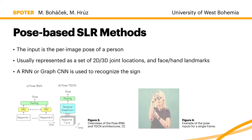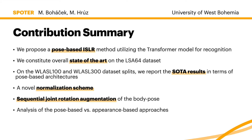The other primary stream focuses on pose-based methods, where the input is an estimated pose of the signer per each image in the sequence. These are usually represented as a set of two or three-dimensional joint locations, and optionally face and hand landmarks. A recurrent neural network or graph CNN is then used to recognize the sign, as can be seen in the architecture outline in figure three. In figure four, you can see an example of the estimated pose we use in this work, showing the body pose and hand landmarks.